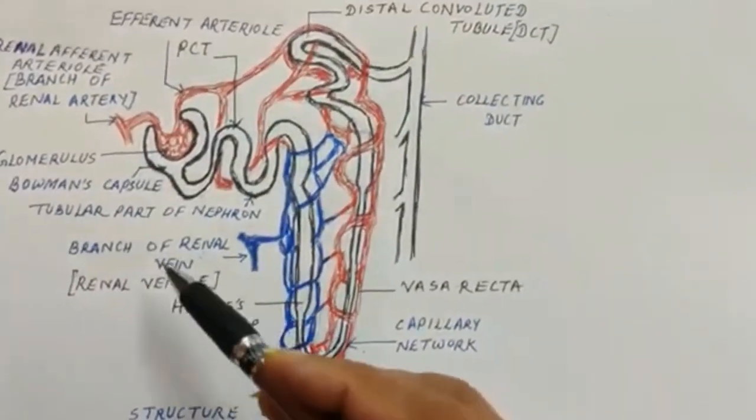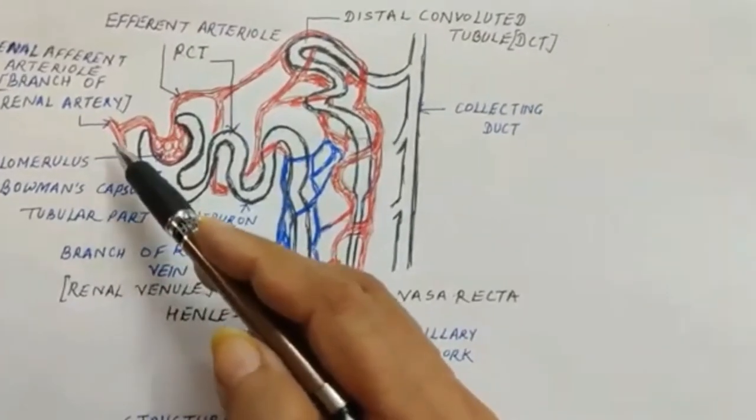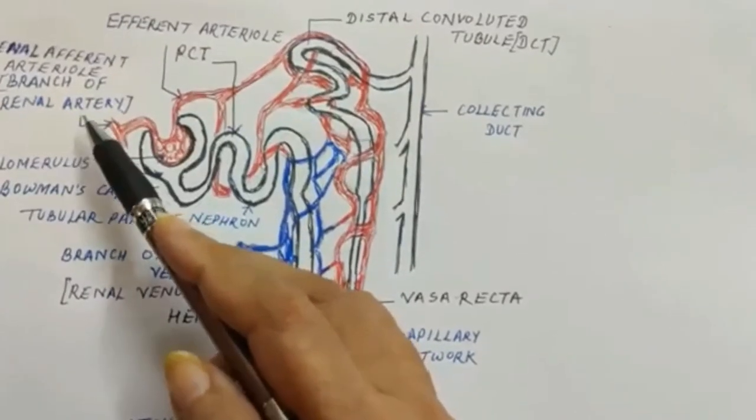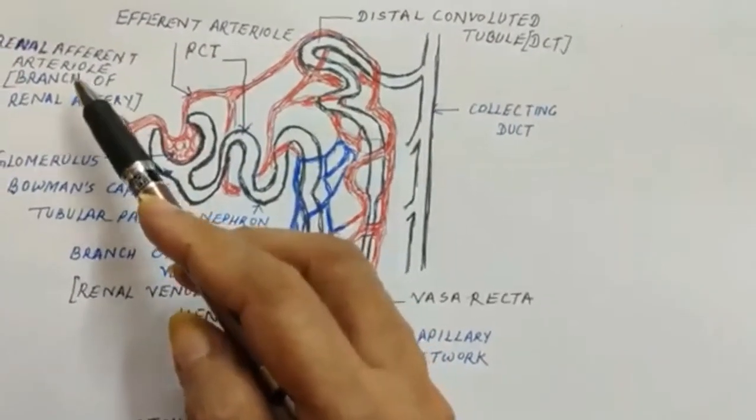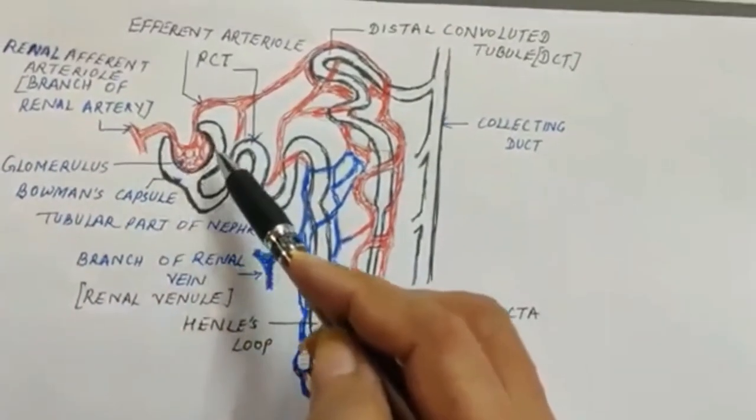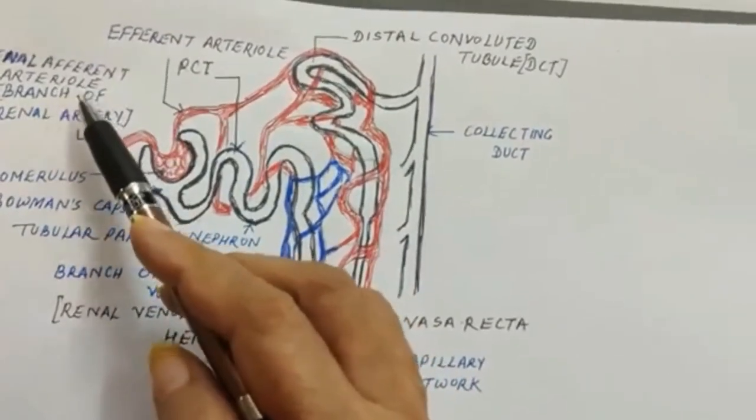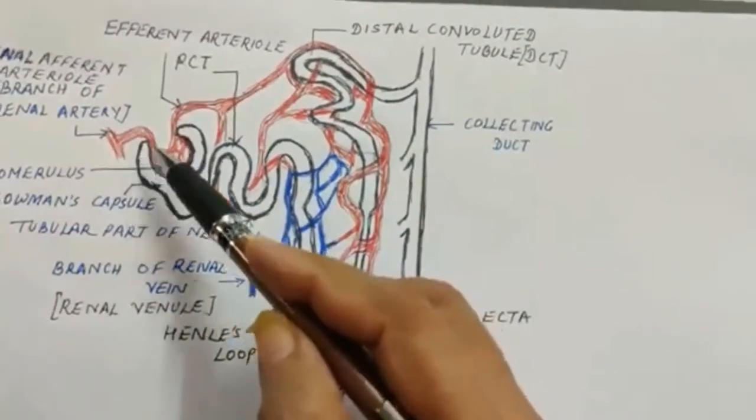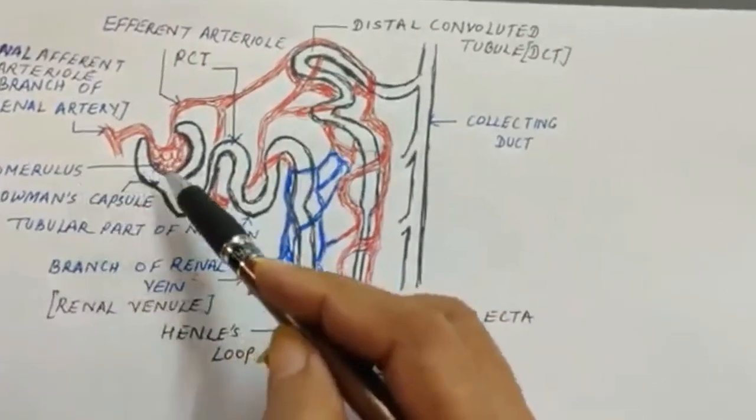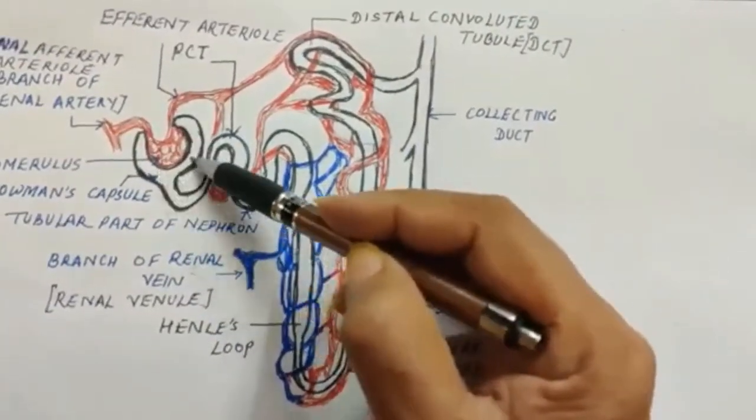The labeling of nephron is complete now. So once again, we are starting with the blood flow coming from the renal artery. The branch would be called the renal artery - since it's entering the Bowman's capsule, so it will be afferent arteriole. Afferent means entry. So it will be afferent arteriole, which will make a bunch of capillaries called glomerulus. When it comes out after filtration, ultrafiltration has taken place.